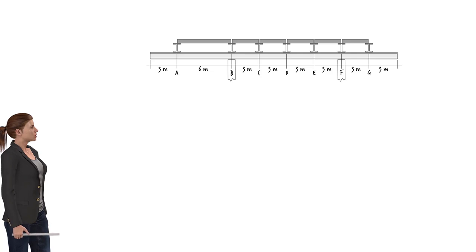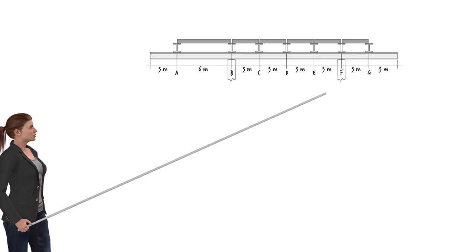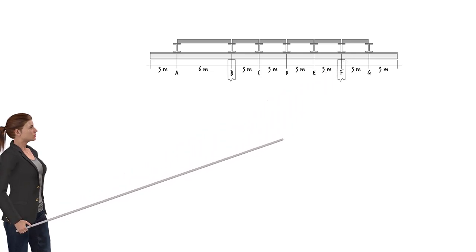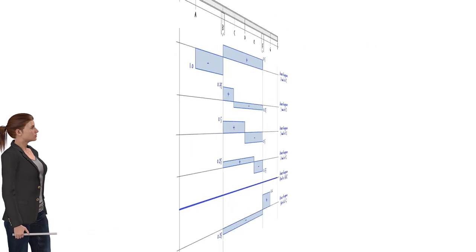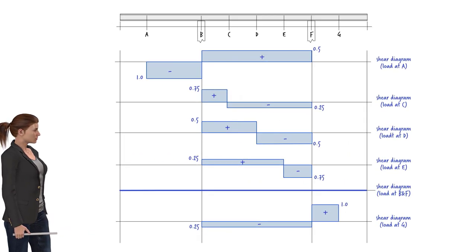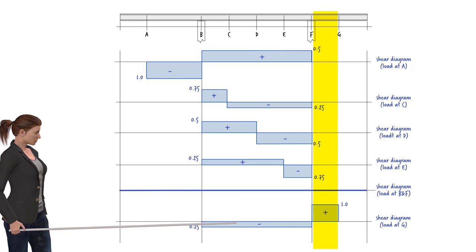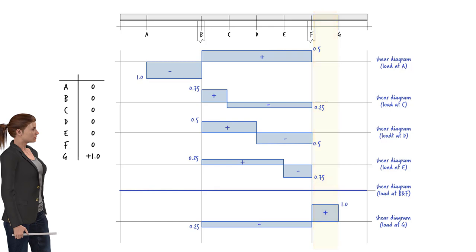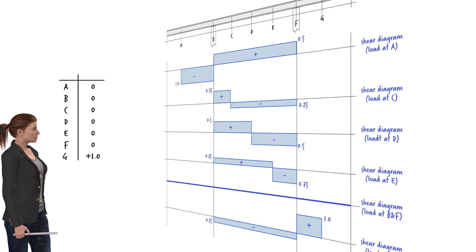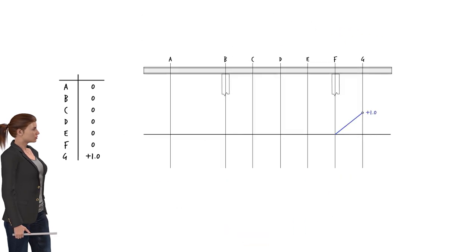Suppose we want to draw the influence line for shear in segment FG. Upon examining the shear diagrams for the girder, we can see that shear develops in the segment only when the unit load is placed at G. Our table of data points reflects this, and when we plot the points, we get the influence line for shear in segment FG.